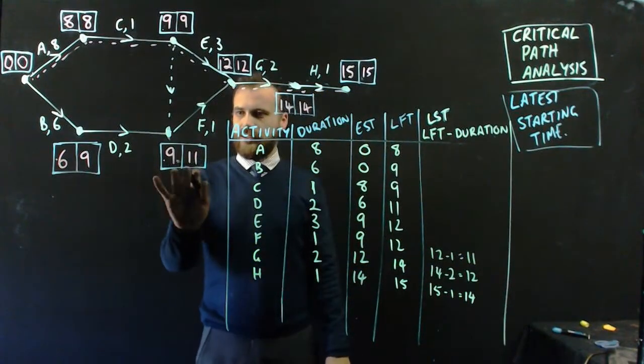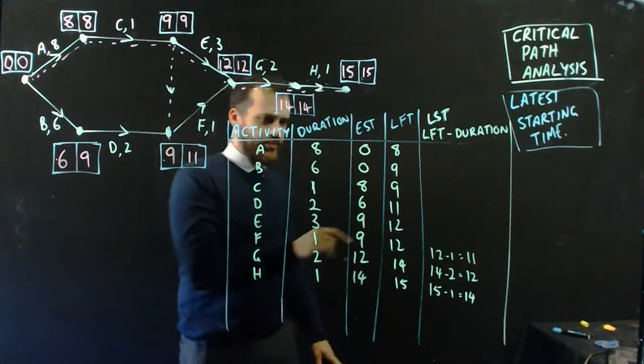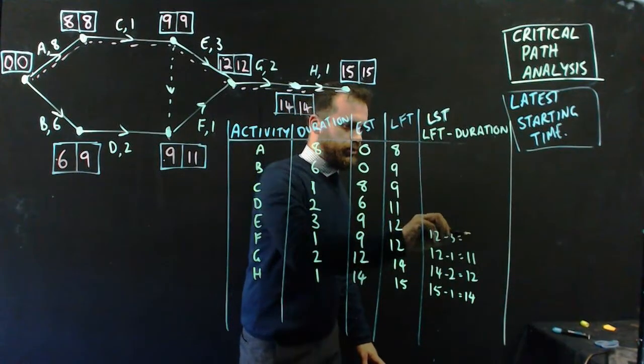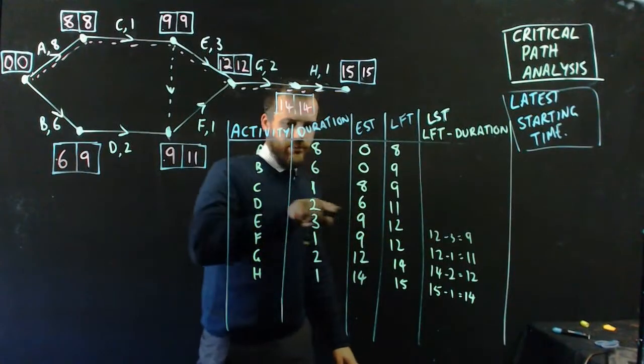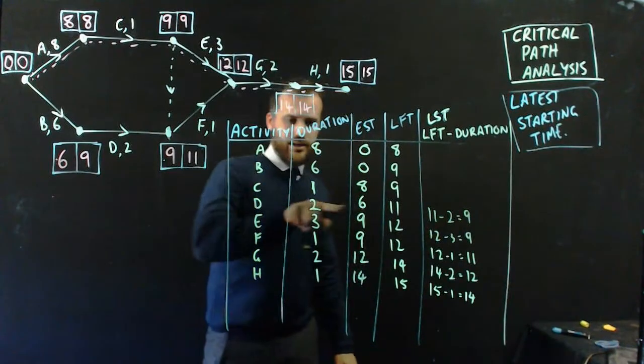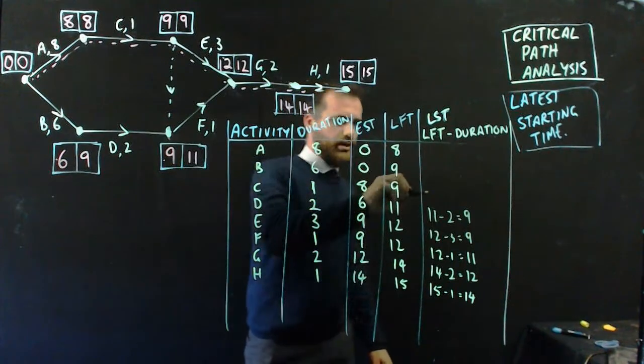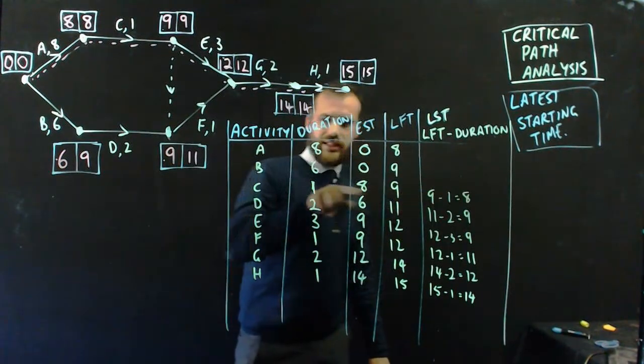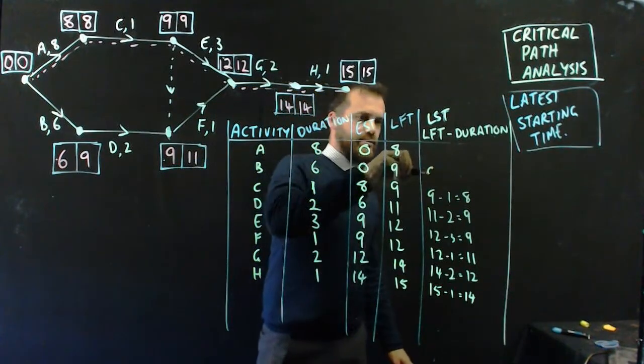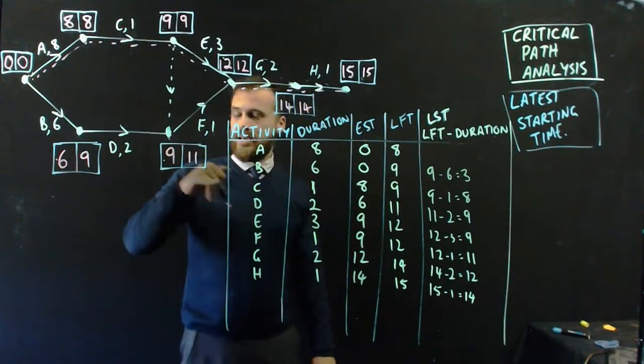We've got a little bit of slack time there. Okay, 12 minus 3 equals 9. That's when we'd better start E. 11 minus 2 equals 9. That's when we'd better start D, the latest we can start D. 9 minus 1 equals 8. That's the latest that we can start C and still get this done on time. 9 minus 6. That's the 3 hour mark. That's the latest that we can start B and still get this done on time.